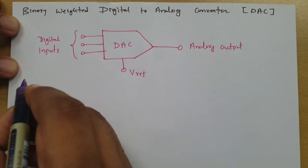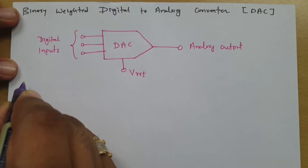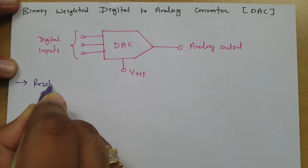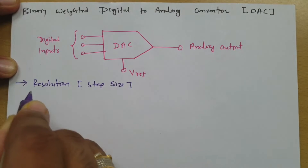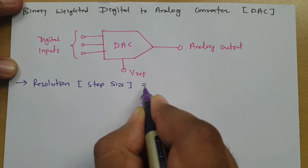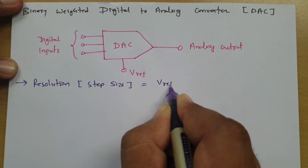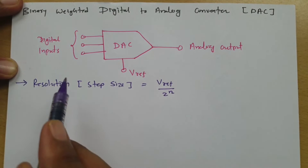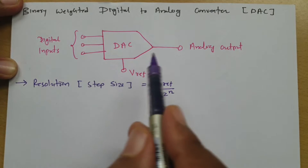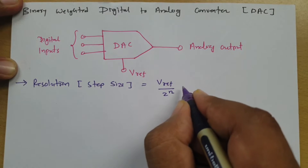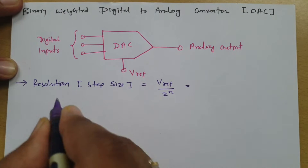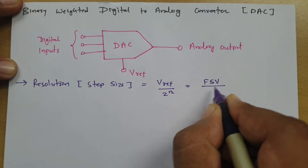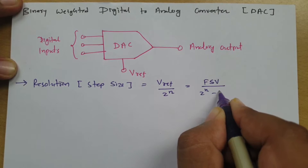The first basic parameter of a digital-to-analog converter is resolution, also called step size. Resolution and step size are the same and can be calculated as V_reference divided by 2 to the power n, where n is the number of bits translated into the analog output. Alternatively, resolution can be calculated as full scale voltage divided by 2 to the power n minus 1.